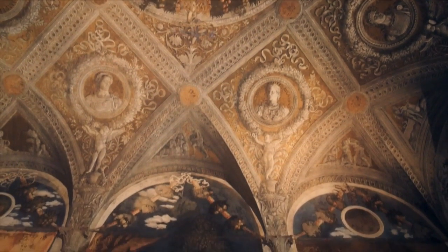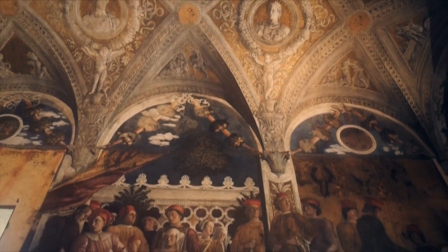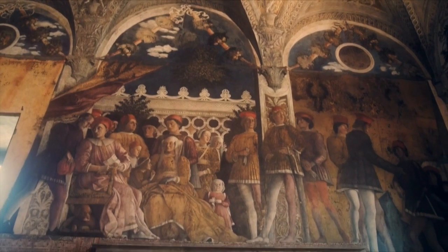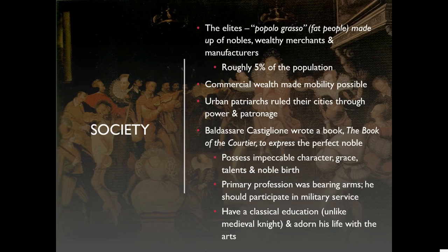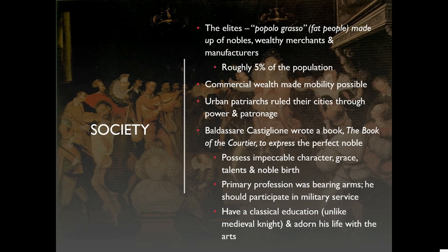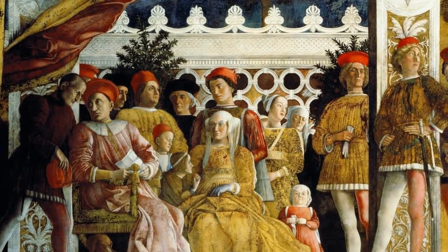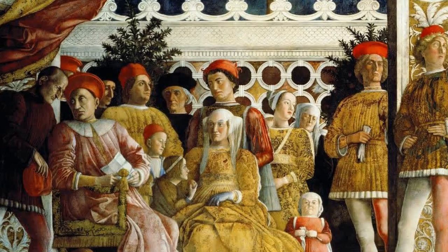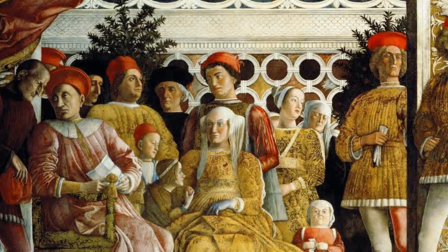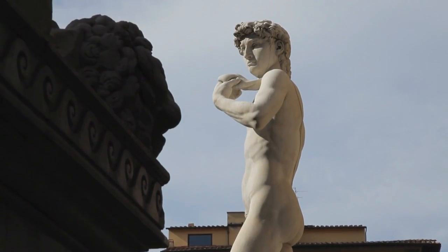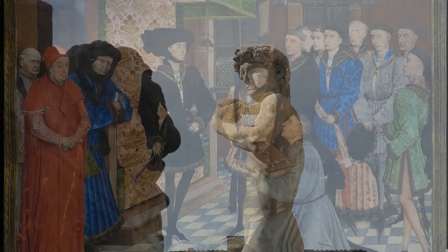There is a reason why we have this explosion of art. We have a lot more money available in Italy to give to the artists. The system of patronage is big, and we have the old elite, the new elite — the fat people as they were called, the popolo grasso, who were the nobility, those wealthy merchants and manufacturers. They were roughly 5% of the population.